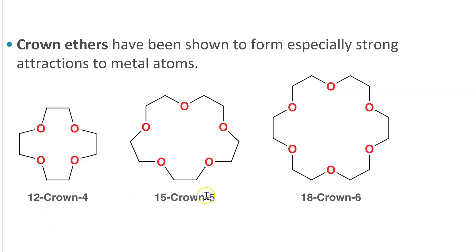Notice the names of the crown ethers. There are two numbers sandwiching the word crown in between, and the first number is three times the second number. The second number is the number of oxygens, and the first number is the total number of atoms in the ring.